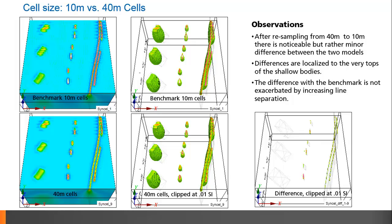As we increase the cell size to 40 meters, we notice that the models are still fairly similar. The differences between the two are localized to the very tops of the shallowest bodies, yet we're still able to resolve the structure and depth extent of each body and see the distinction between the two dikes.